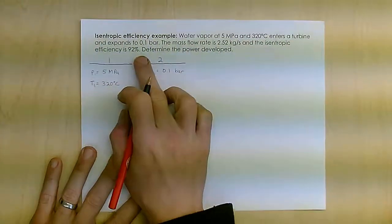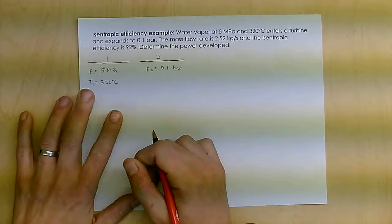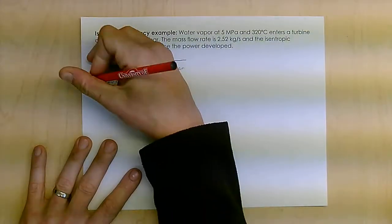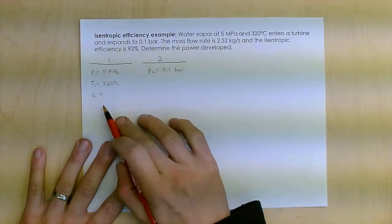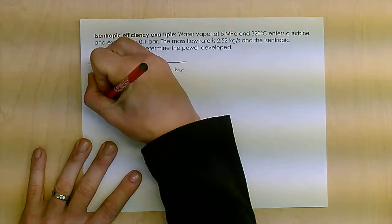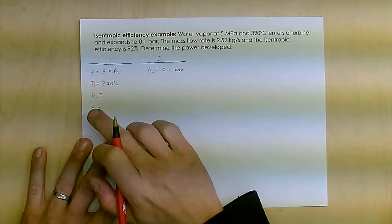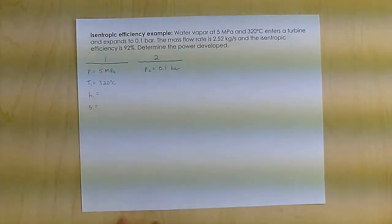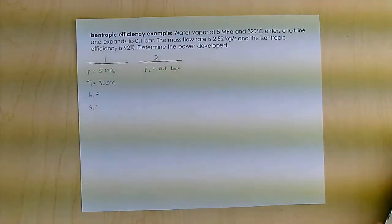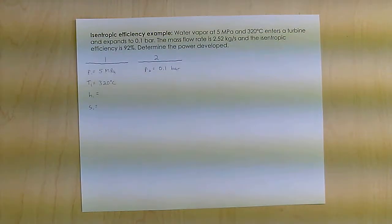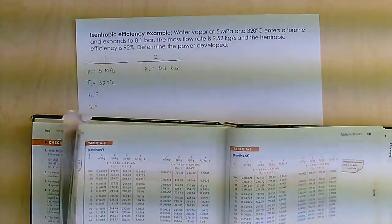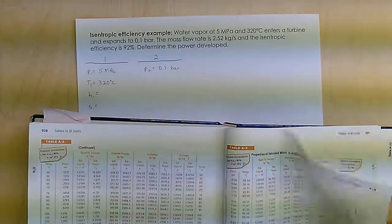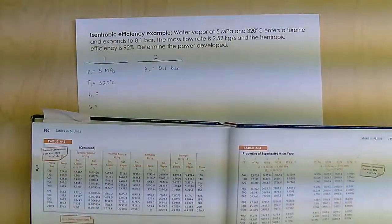We have this isentropic efficiency, so I'm going to look up what's going on at state 1. Because it's fluid flow, I want to look up H, and to figure out this isentropic efficiency, I'm going to look up the entropy value. This is for water, so I'll go to my water table. It's likely going to be steam, so we'll go to table A4.